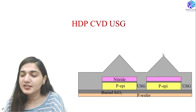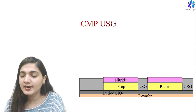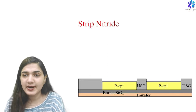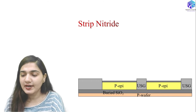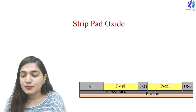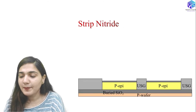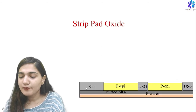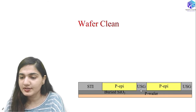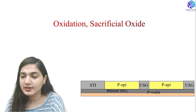The deposited USG creates surface roughness due to the trench topography; CMP is used to remove this roughness. The nitride is then stripped, followed by stripping of the pad oxide, giving a smooth structure with shallow trench isolation layers of undoped silicate glass and P-type epitaxial regions in between. We then do wafer cleaning and deposit a sacrificial oxide over the P-type epitaxial regions.